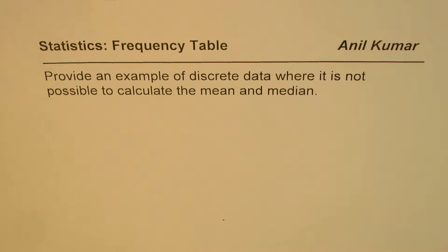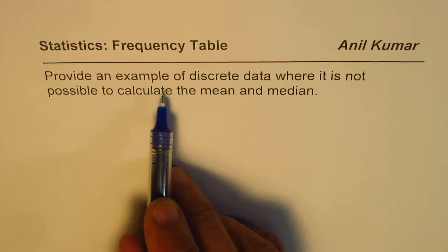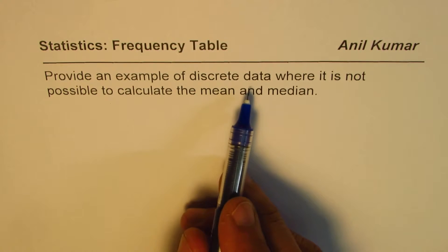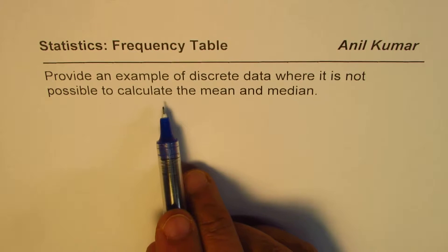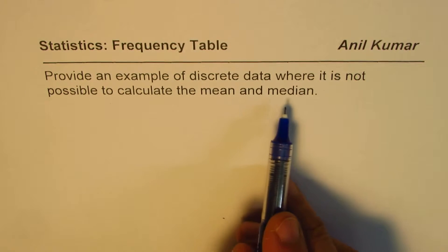I am Anil Kumar and in this video we will highlight that there are situations when it may be difficult to calculate the measures of central tendencies. The question here is, provide an example of discrete data where it is not possible to calculate the mean and median.